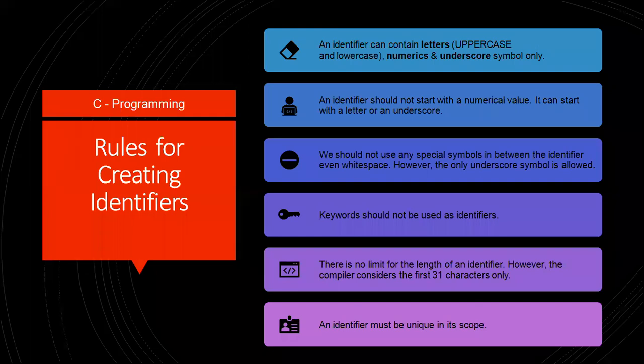Coming to the rules for creating identifiers: an identifier can contain letters, numbers, and the underscore symbol. These letters can be uppercase or lowercase. An identifier should not start with a numerical value — it can start with a letter or an underscore. We should not use any special symbols within an identifier, not even whitespace; the only special symbol allowed is an underscore. Keywords should not be used as identifiers. There is no limit for the length of an identifier; however, the compiler considers only the first 31 characters. An identifier must be unique in its scope.